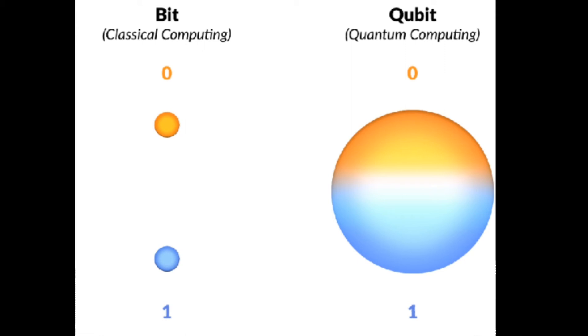Particles in the quantum world are at several places at once, and they do not have to decide where they actually are. They do not have to decide this before we have a look at them. So if we look at an electron and we see it somewhere, this is only where it decided to be at the moment we looked at the electron, and this is quantum superposition.